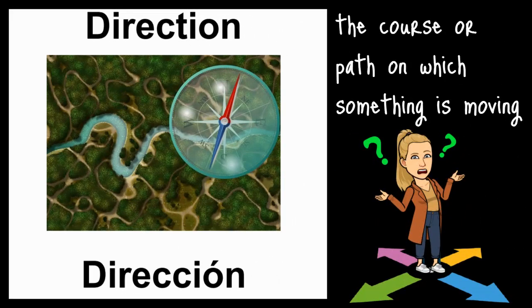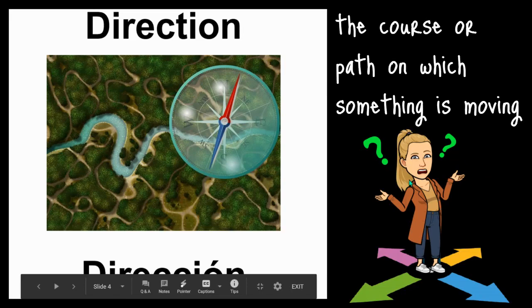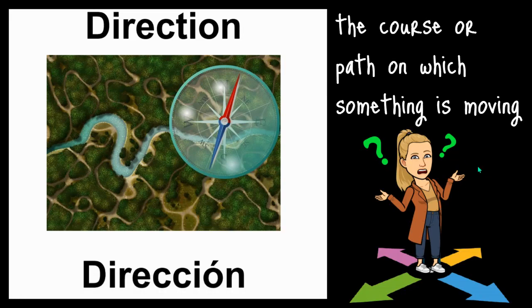Our next word is direction. Direction is the course or path on which something is moving. In this example we have a compass showing us the direction that they need to go — are they going to move north, east, south, or west? In this example over here I'm lost and I don't know what direction to go in. Guess I could use this map over here.